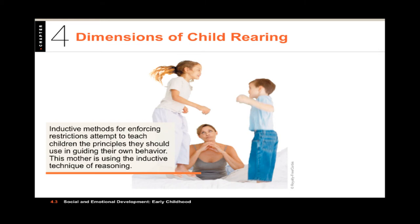Power assertive methods can include things like physical punishment and the denial of privileges. They're related to parental authoritarianism and often have negative effects on children, including lower acceptance by peers, poorer grades, more antisocial behavior, and they seem to prevent children from developing their own internal standards of conduct — and can be linked with aggression and delinquency. Withdrawal of love is another method where parents can isolate or ignore their misbehaving children, which can actually be more threatening to kids than physical punishment and can branch into a form of neglect and abuse.